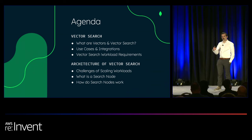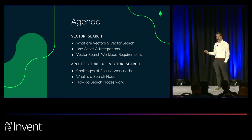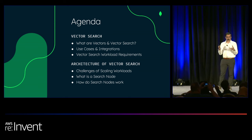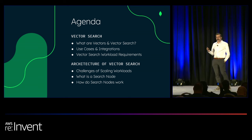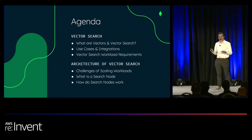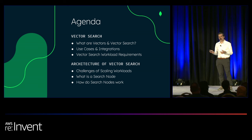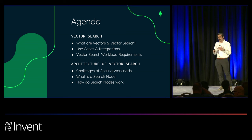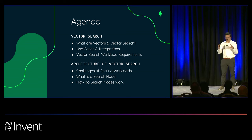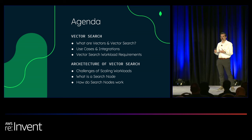The agenda for today is really going to start with Vector Search. We're going to talk about what are vectors and what is Vector Search as a core primitive. Then we're going to go into use cases and integrations, followed by the unique requirements of Vector Search workloads. Then I'm going to transition to my colleague, and he's going to talk about the challenges of scaling Vector Search workloads and this new primitive called Search Nodes, and finish with how Search Nodes release the power and flexibility of the MongoDB document model to power Vector Search workloads in a scalable and easy-to-use way.